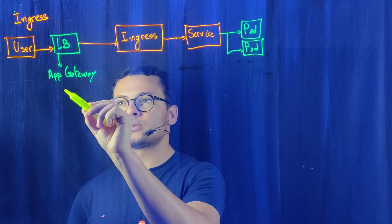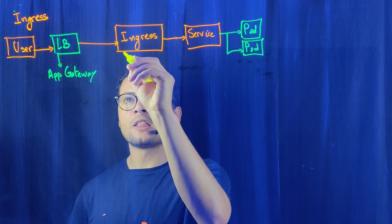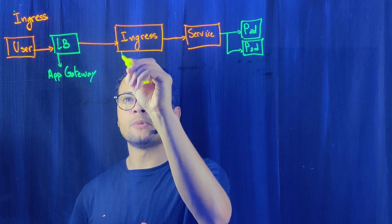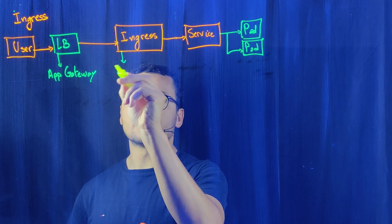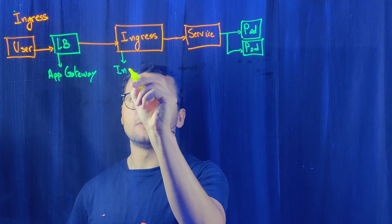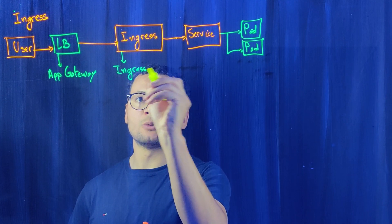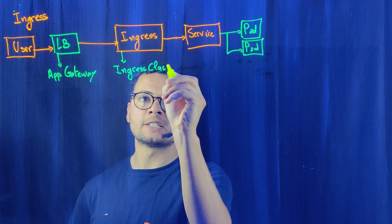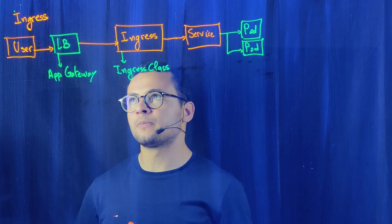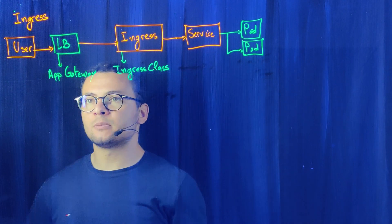One load balancing solution would be the Azure Application Gateway, which would be described within an IngressClass defined in my cluster. So I would have here the IngressClass resource. That is the Ingress model.